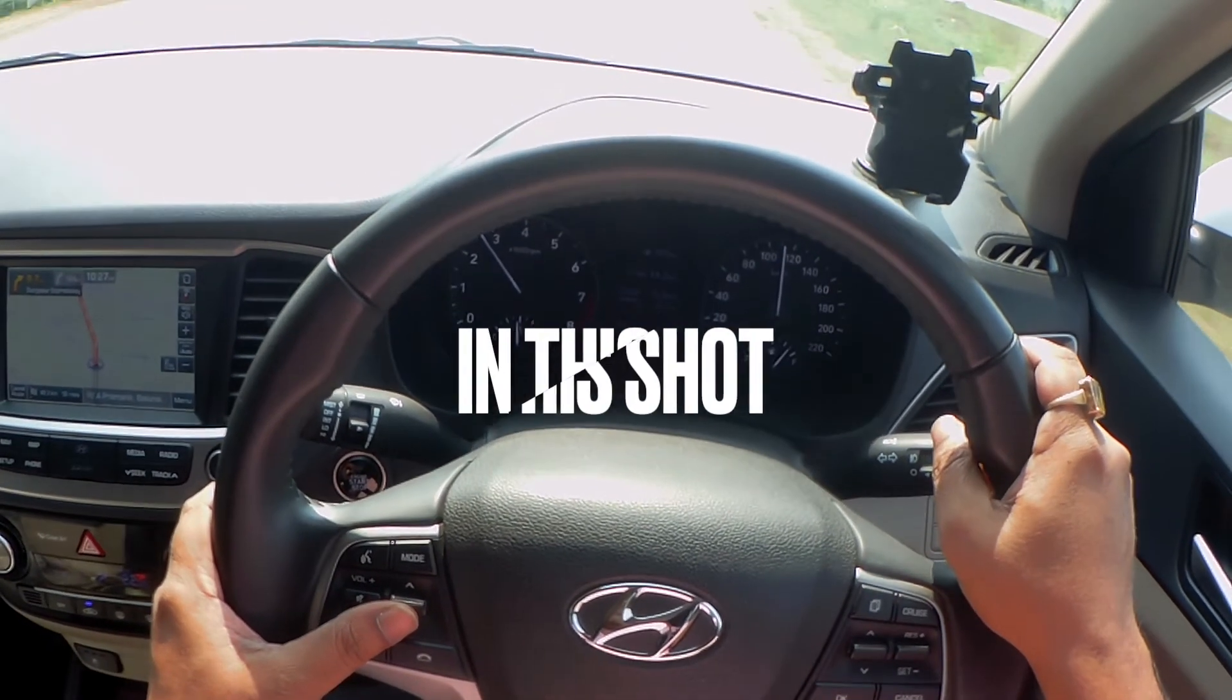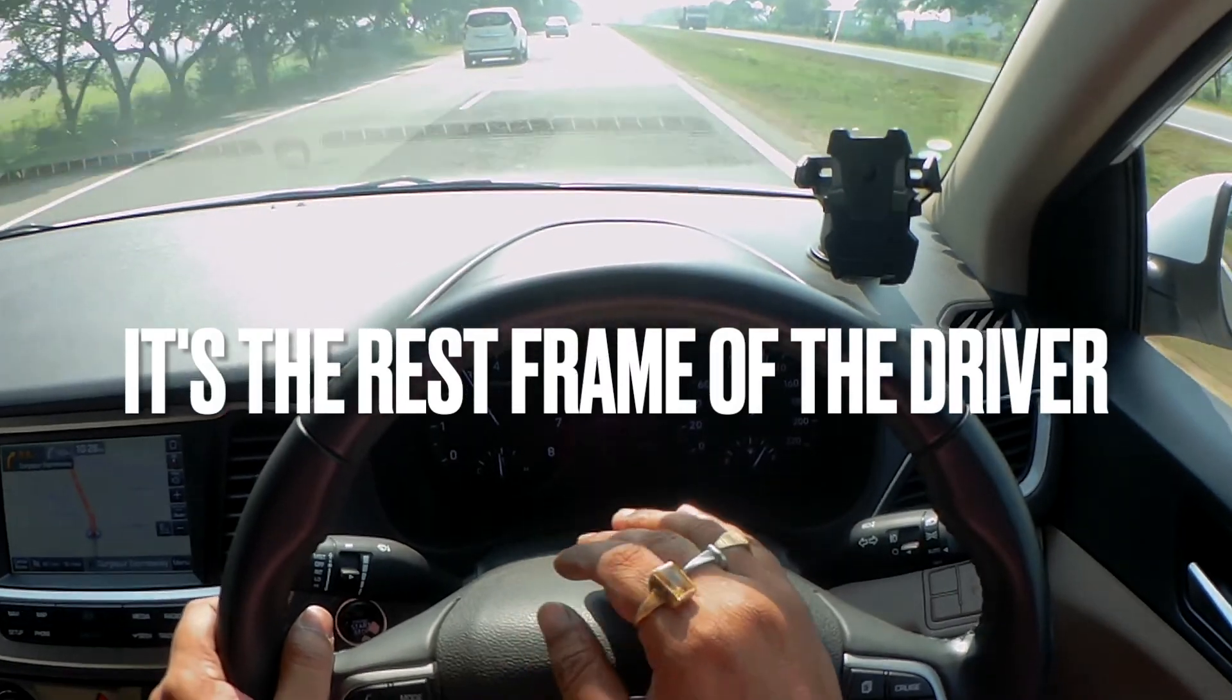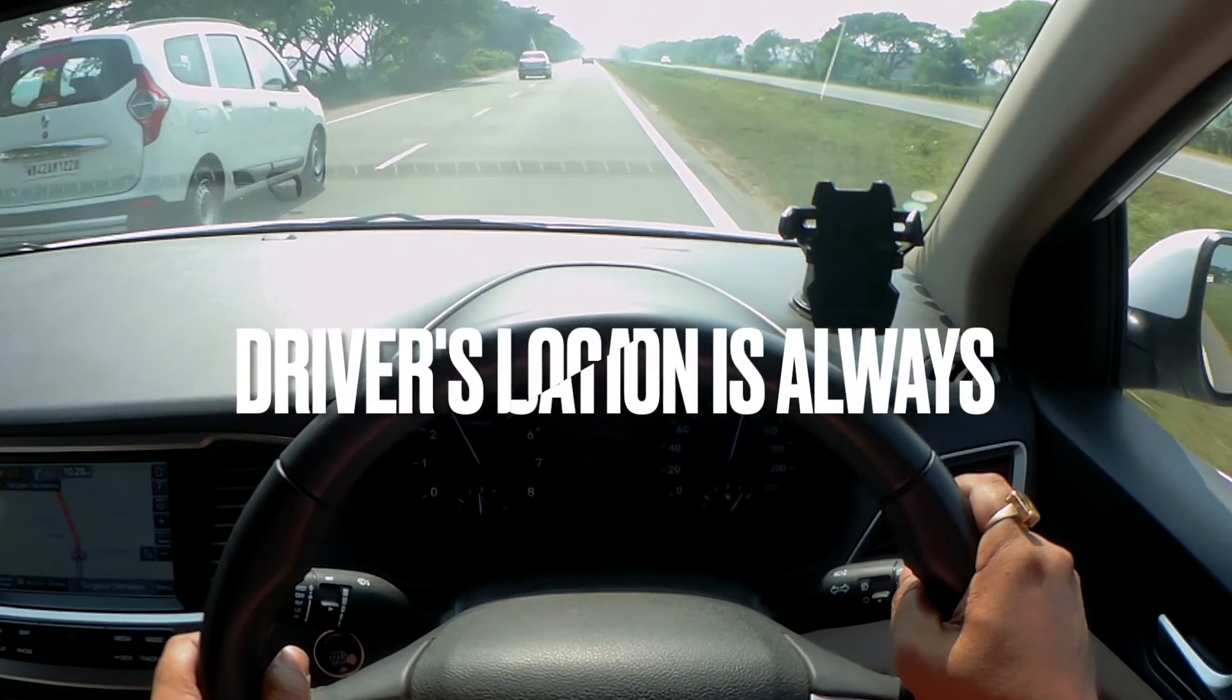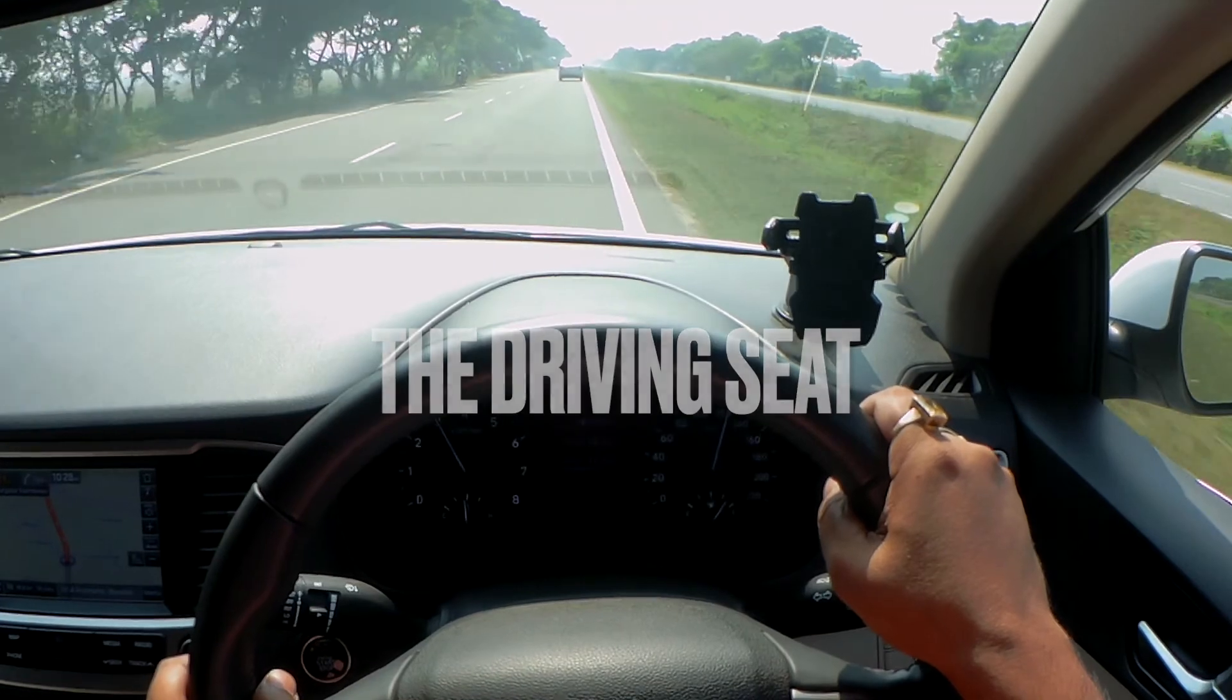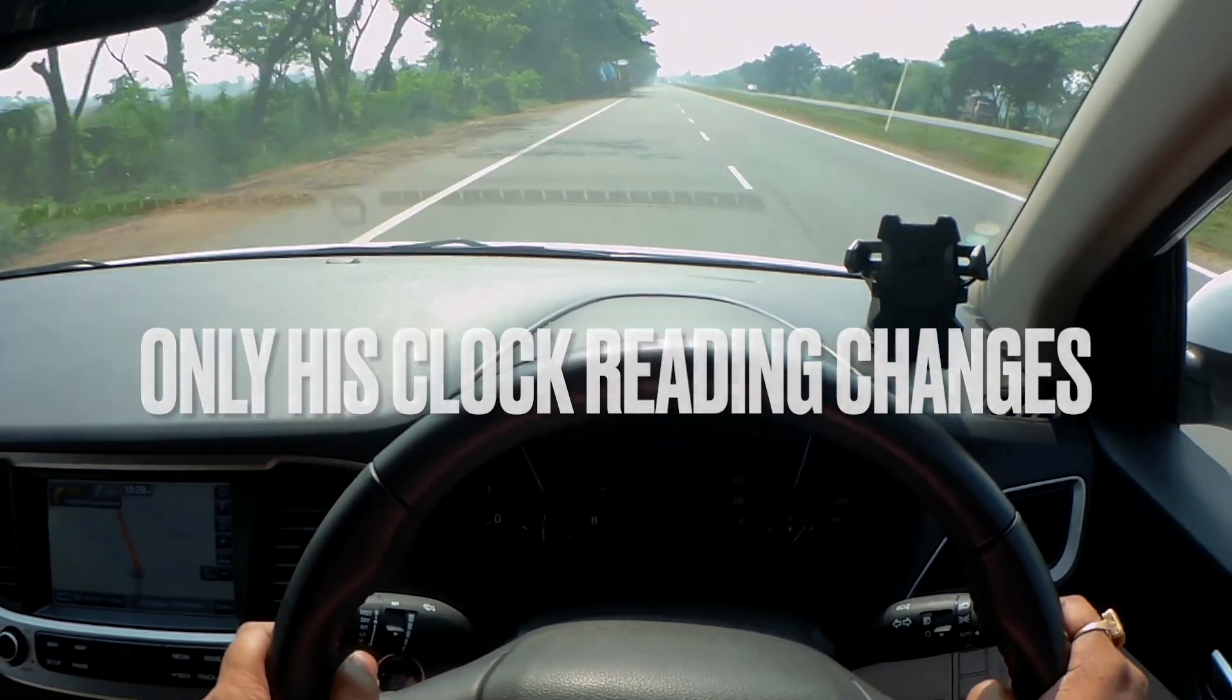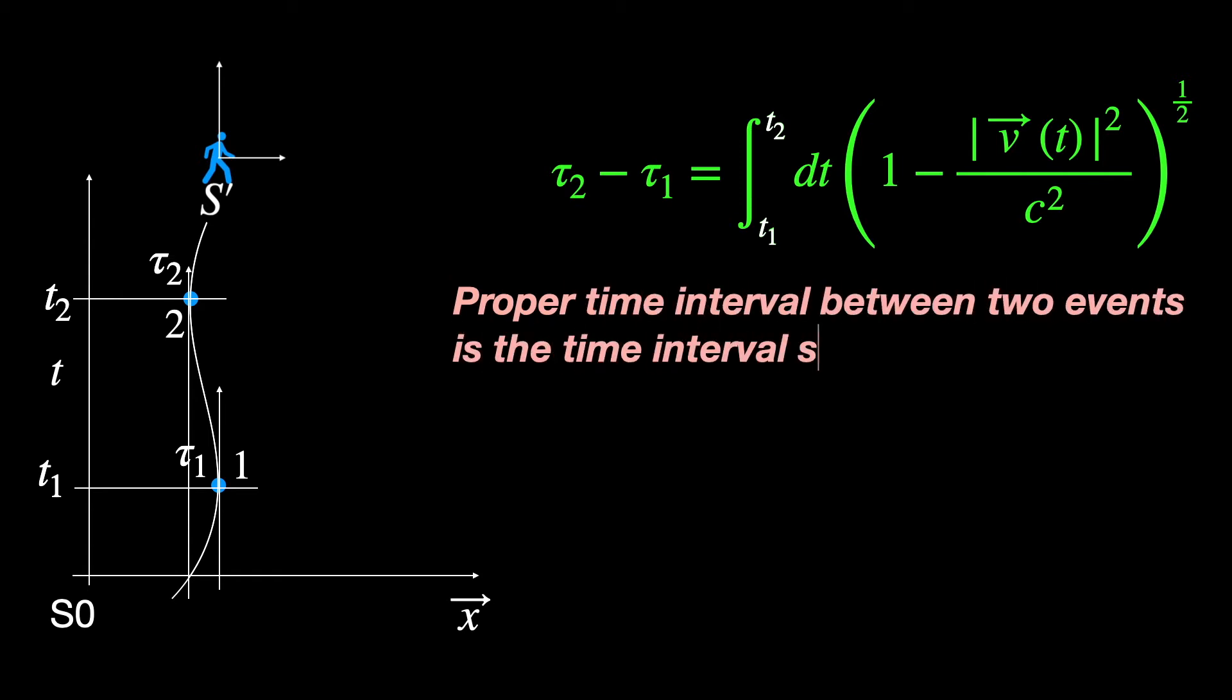Now, in this moving guy's rest frame, all events on his world line have the same spatial location, his location, the origin of his rest frame, if you may. So in his rest frame, all these events are separated by time only whereas in our frame, these events are separated both temporally and spatially from each other. So this guy has a unique perspective to all the events on his world line that no observers in other reference frames can have. For him, the space-time interval between events on his world line appears as purely time interval shown by his clock. Because of this unique nature or unique feature, we refer to it as the proper time interval. So we can define proper time interval between two events as the time interval shown by a clock which is present at both the events.